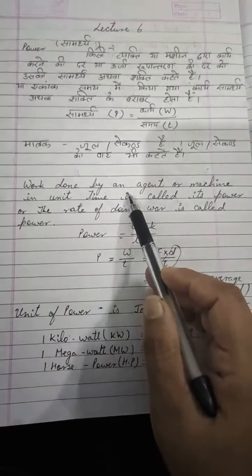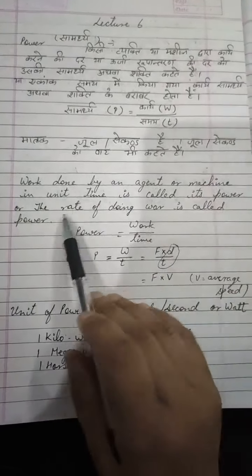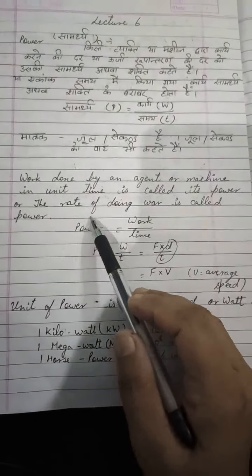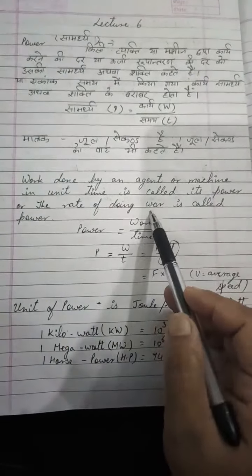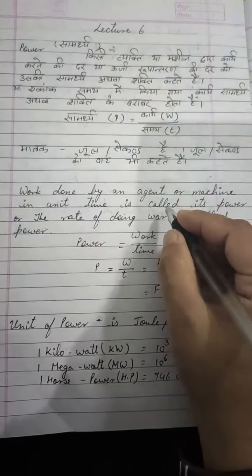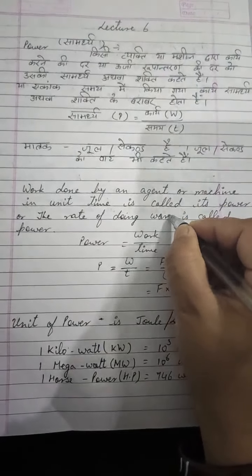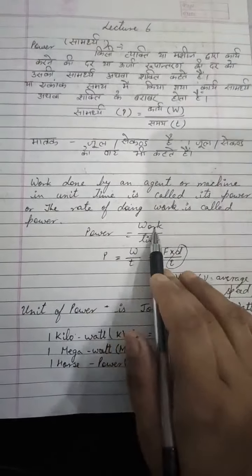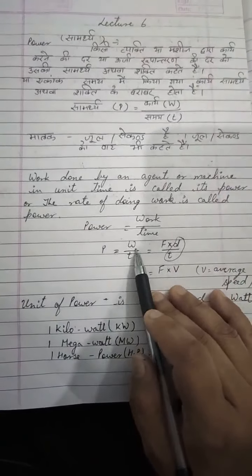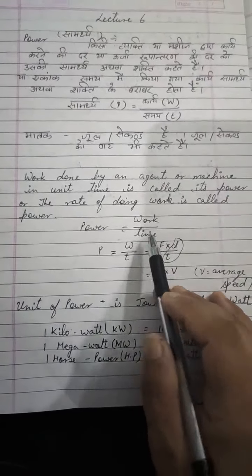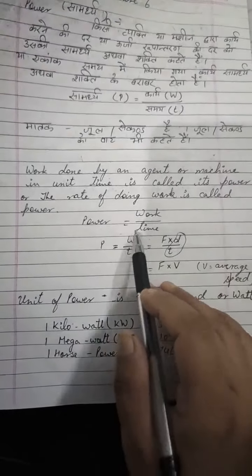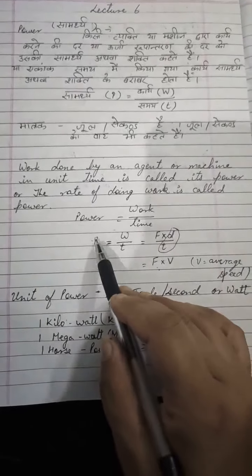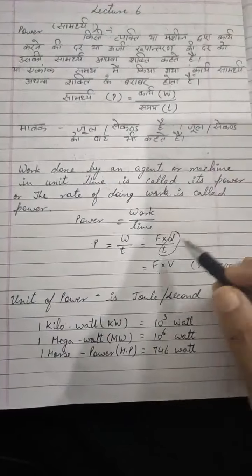Work done by an agent or machine in unit time is called its power. The rate of doing work is called its power. Power is equals to work upon time, and you all know that this is the relation between power and velocity.